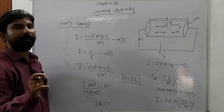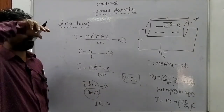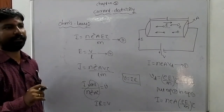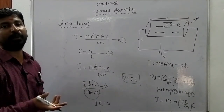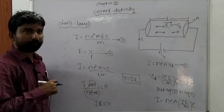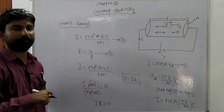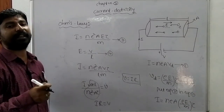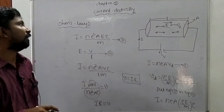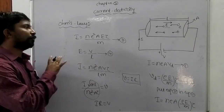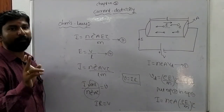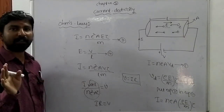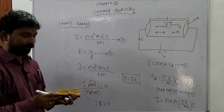Limitations of Ohm's Law: Ohm's Law is only applicable for conductors or ohmic devices. Ohm's Law does not apply to semiconductors or insulators. Ohmic devices are those which obey Ohm's Law; non-ohmic devices are those which do not obey Ohm's Law. Next class we will continue. Thank you.